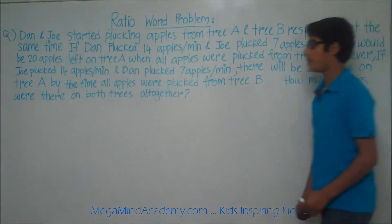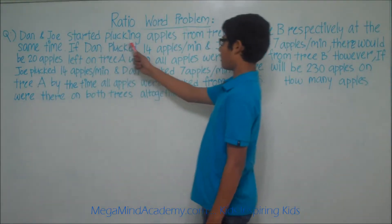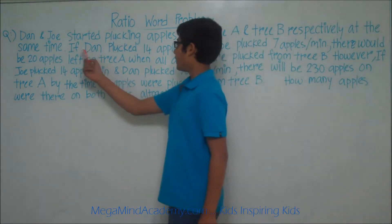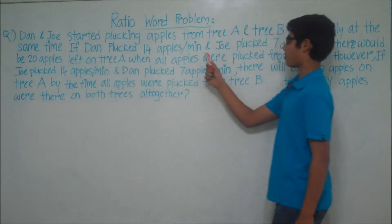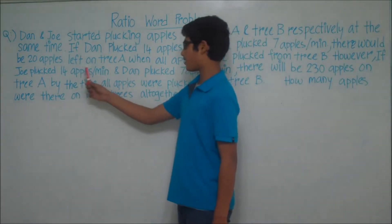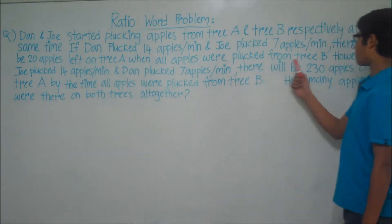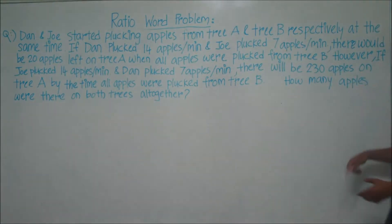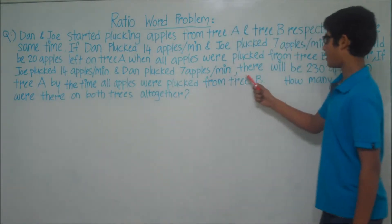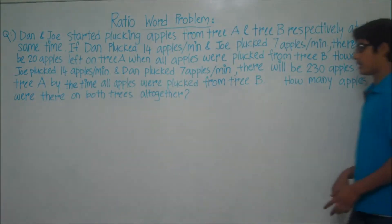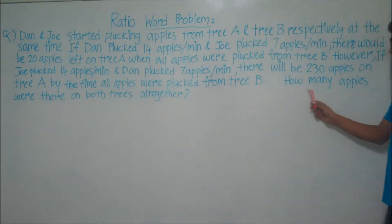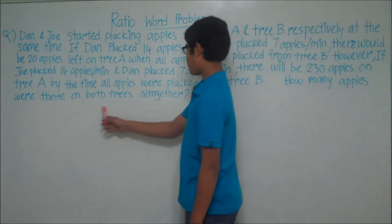Let's say we have a problem like Dan and Joe started plucking apples from tree A and tree B respectively at the same time. If Dan plucked 14 apples per minute and Joe plucked 7 apples per minute, there will be 20 apples left on tree A when all the apples were plucked from tree B. However, if Joe plucked 14 apples per minute and Dan plucked 7 apples per minute, there will be 230 apples on tree A by the time all the apples were plucked from tree B. How many apples were there on both trees altogether?